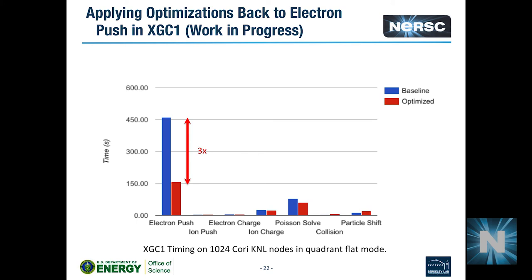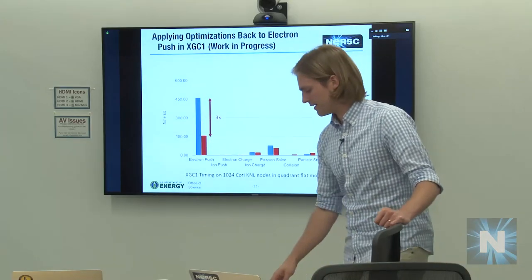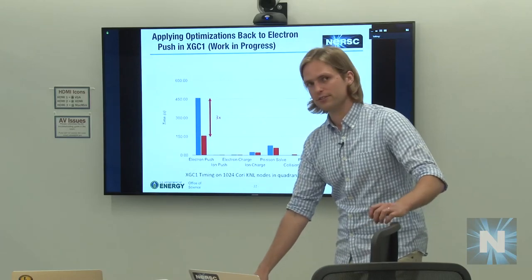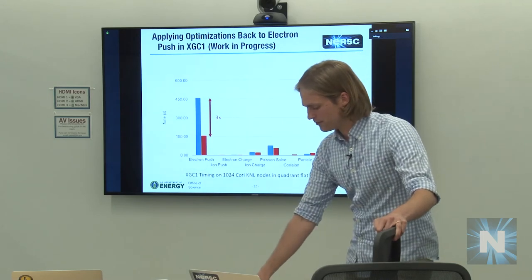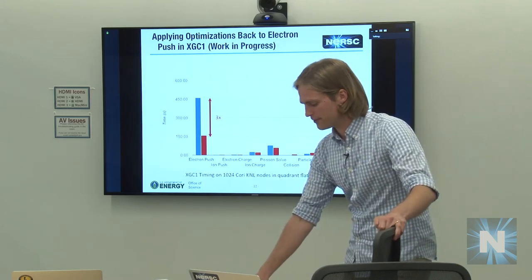We put some of these optimizations back into the XGC1 electron push — still work in progress, as some things are complicated to port. We got the electron push down by about 3x on 1000 nodes. It's still the most expensive part, but not as dramatically as before. We're now running into a situation where Poisson's solver is getting more expensive due to MPI communications, which is what we're working on right now.